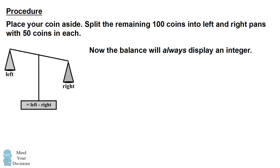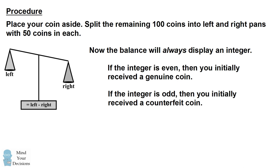Now the display on the balance will always be an integer. I'll explain why later in the video. If the integer is even, then you initially received a genuine coin. If the integer is odd, then you initially received a counterfeit coin.